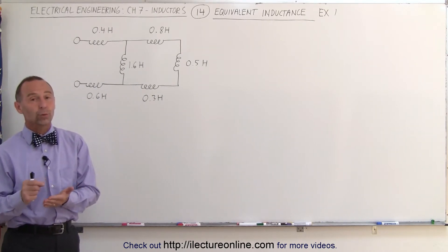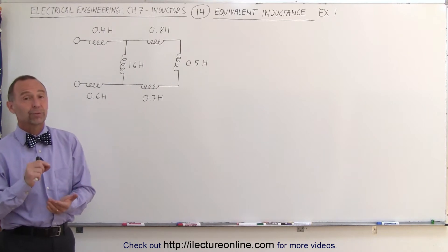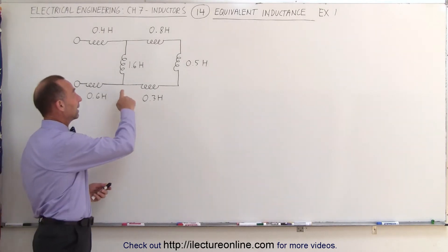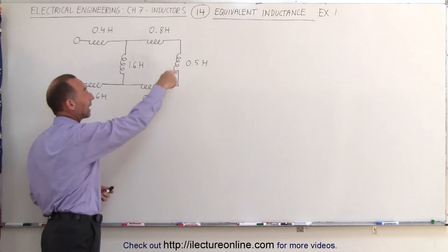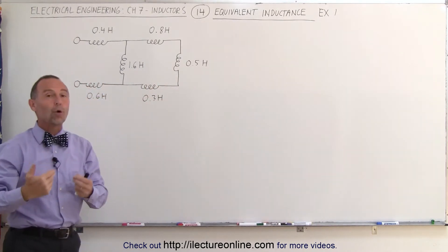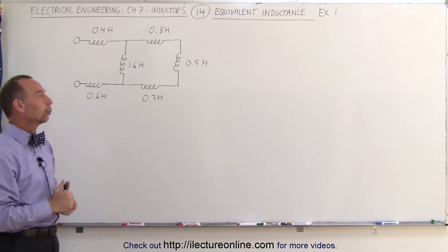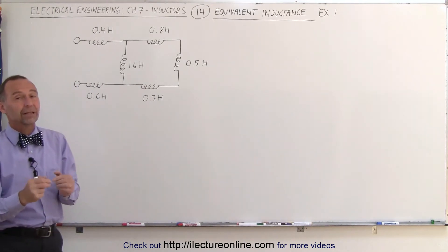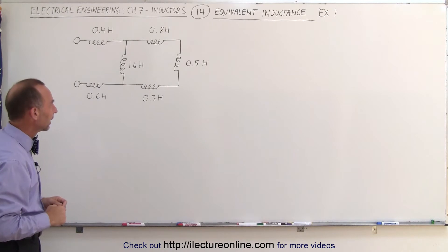Now it turns out the rules for inductors are exactly the same as the rules for resistors. When inductors are in series, we simply add them together. When inductors are in parallel, we use the 1 over L, or the 1 over rule. If there's only 2 in parallel, then we use the product over the sum rule.